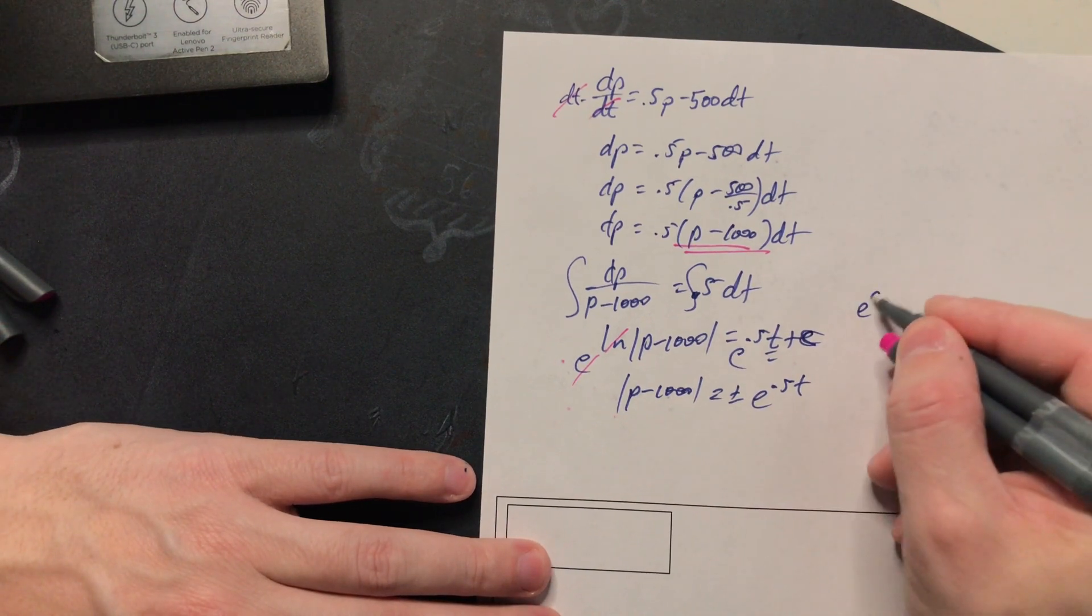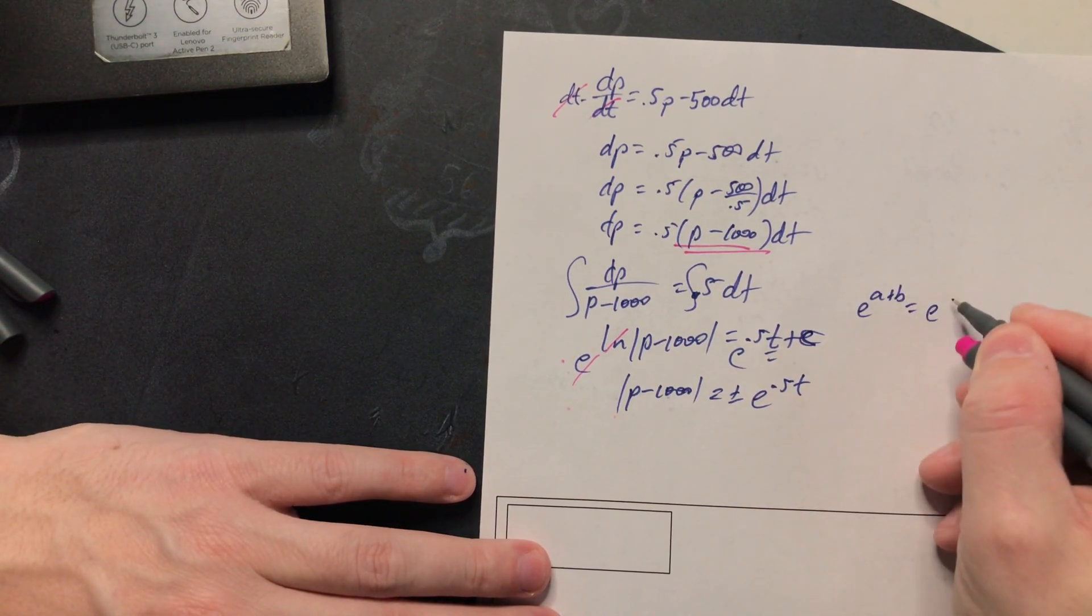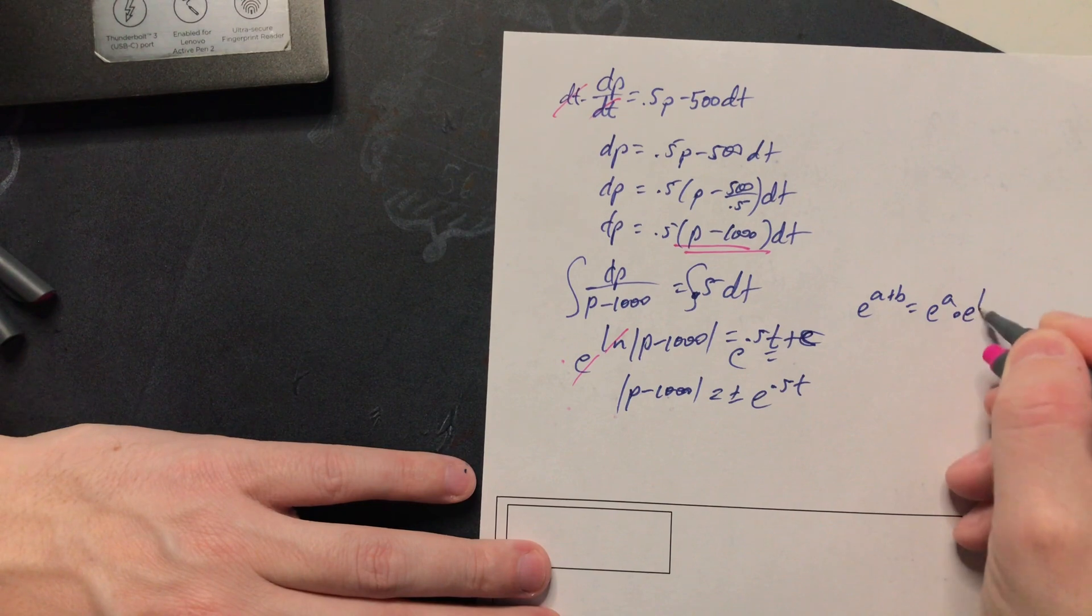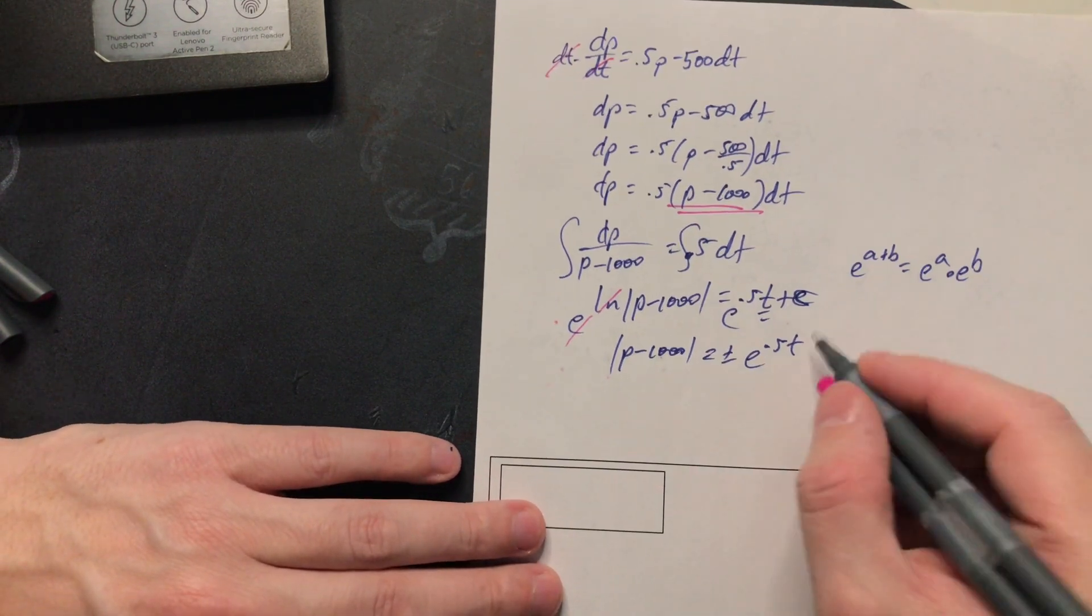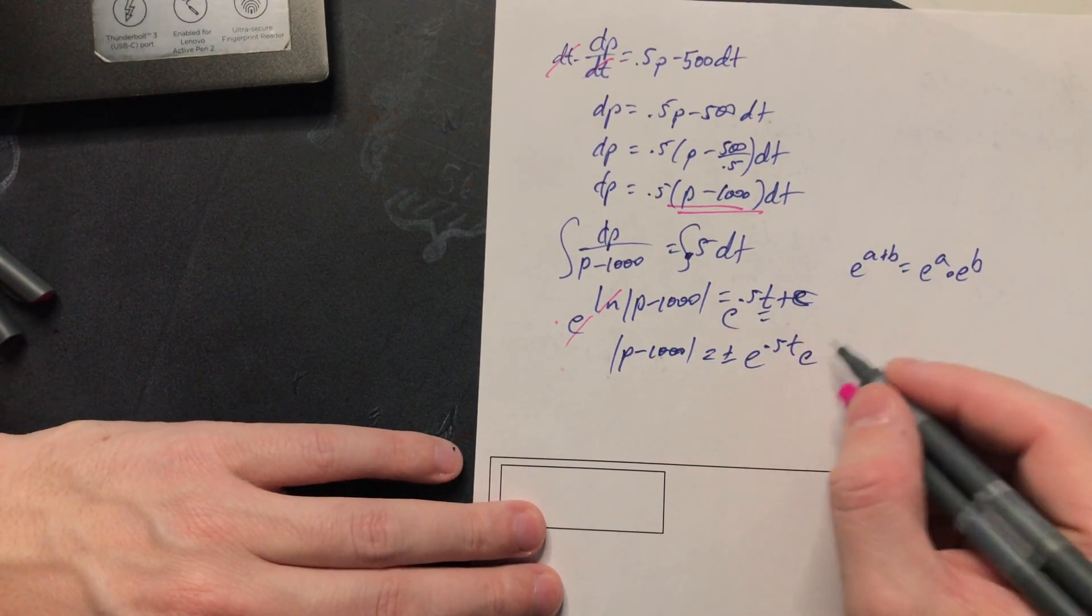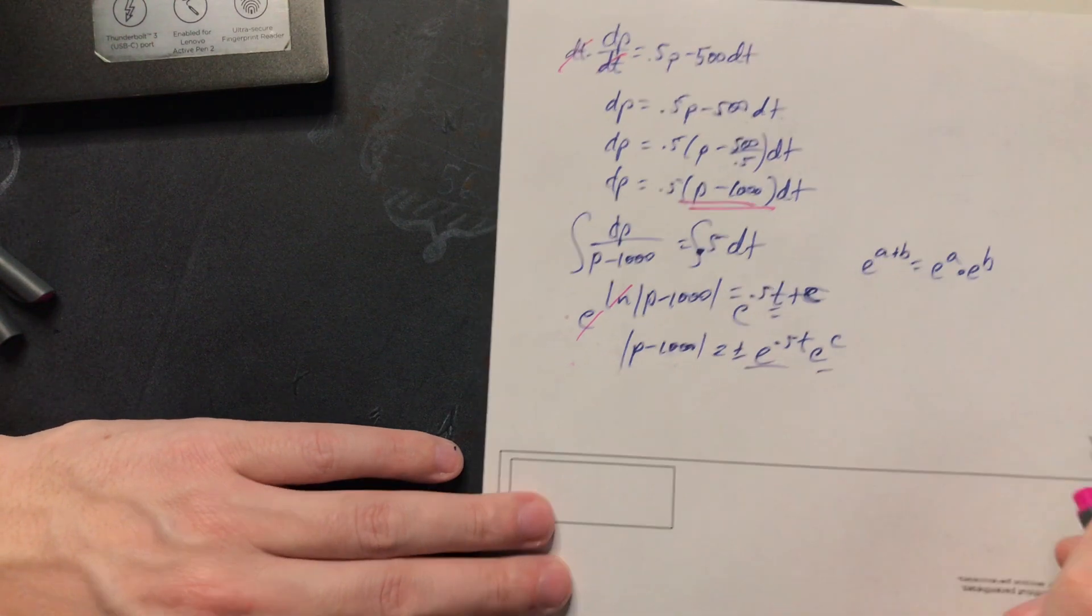If you have e to the a plus b it's e to the a times e to the b so you can use that here. This is going to be e to the c. So break this into two separate pieces.